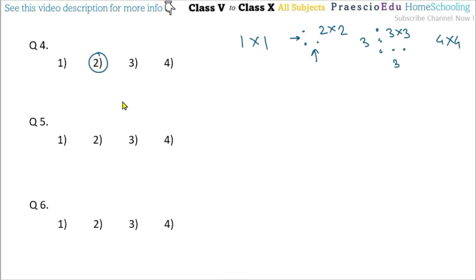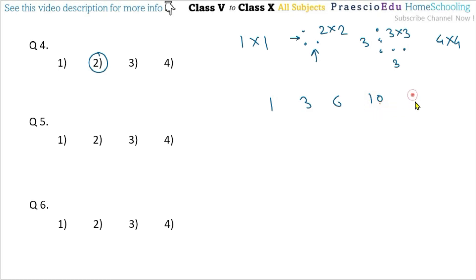Question number 5: the sequence is 1, 3, 6, 10. These are triangular numbers, so the next triangular number after 10 is 15. The answer 15 is given in option number 2.